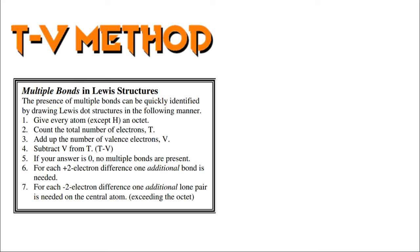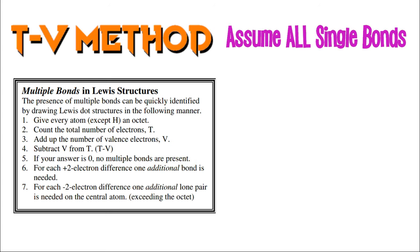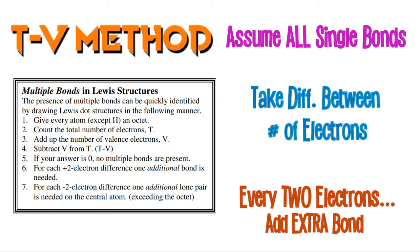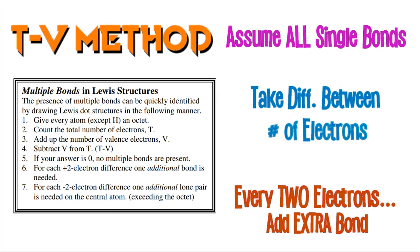The rules and steps are on the left, but to summarize: we assume all single bonds to start every problem. If you take the number of electrons in your drawing and compare them to the valence electrons you're actually working with, the difference will tell you how many extra bonds you need. If there's no difference, it's done and you have all single bonds.